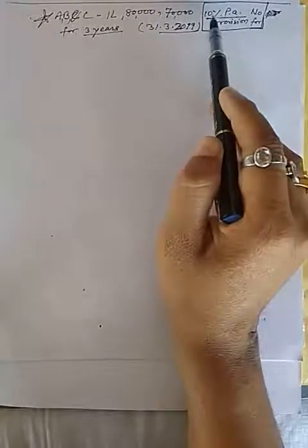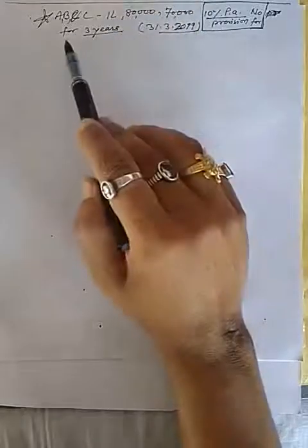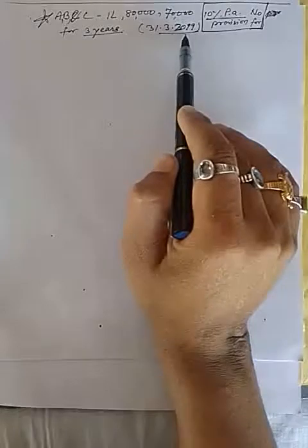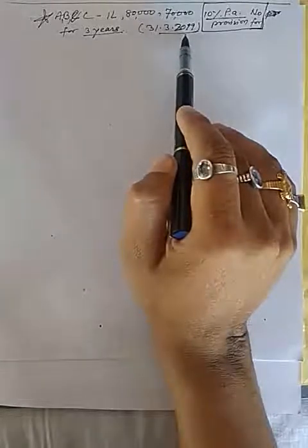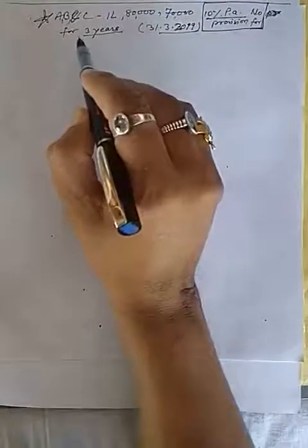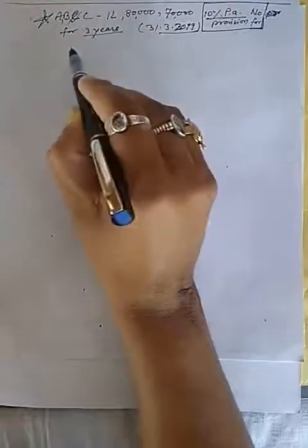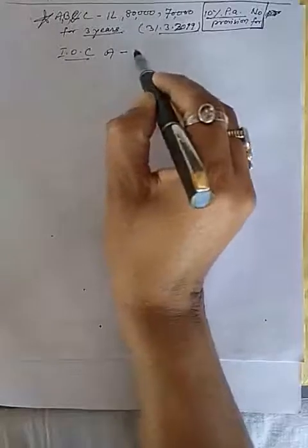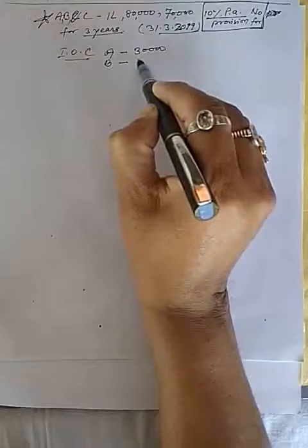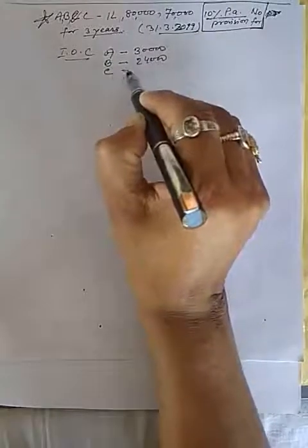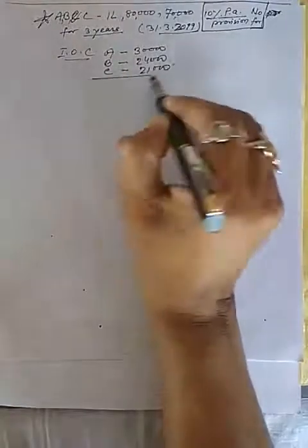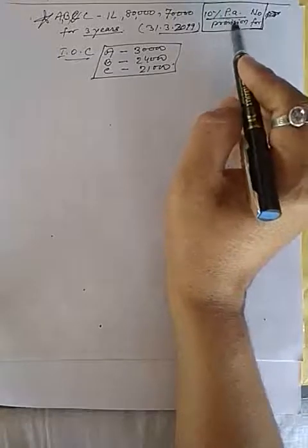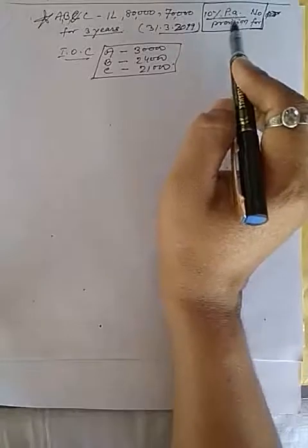Interest on capital was given at 10 percent for three years. Suppose the accounting year closed on 31st March 2019. We will rectify it — the same process will apply. First we calculate interest on capital: A's interest on capital is thirty thousand, B's is twenty four thousand, and C's is twenty one thousand. But in this question there was no provision for interest on capital.